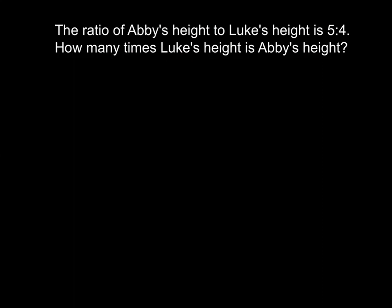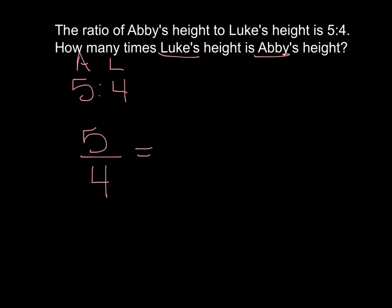Now pause the video and try this practice problem on your own. Okay, let's go over the problem. It says the ratio of Abby's height to Luke's height is 5 to 4. How many times Luke's height is Abby's height? So Abby would go on top: 5 to 4, Abby to Luke. So we have Abby which is 5, and Luke which is 4. You want to make sure you simplify. 4 goes into 5 one time with 1 out of 4 left over, so that's 1 and 1 fourth times. We can say that Abby is 1 and 1 fourth times Luke's height.